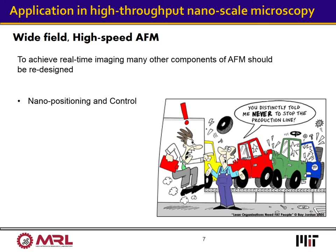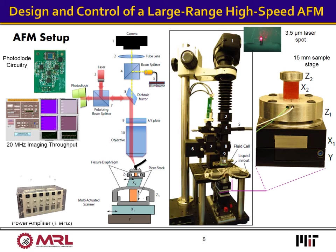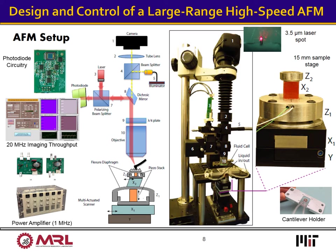As discussed earlier, one important application of precision positioning is in microscopy. However, nanoscale microscopy instruments operate similar to production lines where a single slow component slows down the whole process. As such, to benefit from the speed performance of our nanopositioner in atomic force microscopy, all other components of the AFM, including optics, electronics, actuator drives, and even data logging and visualization, need to be redesigned. Here you can see our fully custom atomic force microscope with all associated components designed for high-throughput performance. This instrument is used in various real-time chemical, electrochemical, and biological studies.